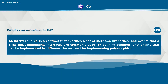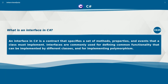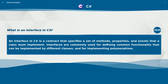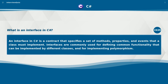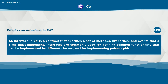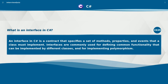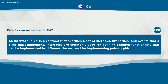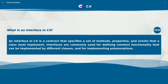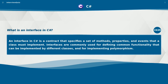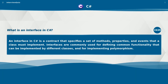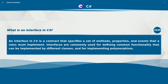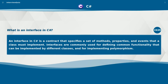What is an interface in C#? An interface in C# is a contract that specifies a set of methods, properties, and events that a class must implement. Interfaces are commonly used for defining common functionality that can be implemented by different classes and for implementing polymorphism.